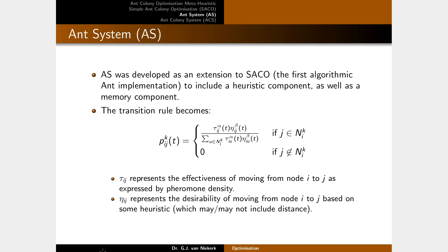The ant system was developed as an extension to SACO and includes a heuristic component, as well as a memory component. The transition rule now has a new component eta_ij^beta — beta amplifies or muffles the effect of the heuristic value eta. Eta_ij is the heuristic affinity to move from node i to node j — this could be the length of the edge, cost, number of hops, crossing edges, or any other heuristic relevant to moving from node i to node j.